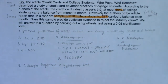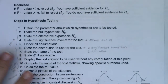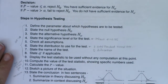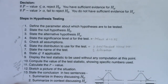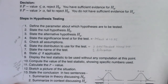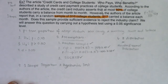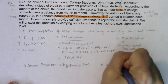Step eight: degrees of freedom. In proportion land, on the standard normal curve, there are no degrees of freedom. So I write: degrees of freedom — not applicable.